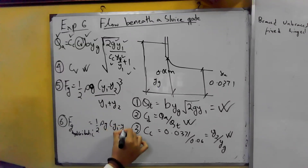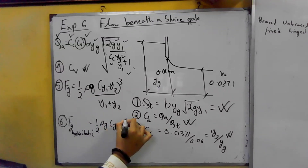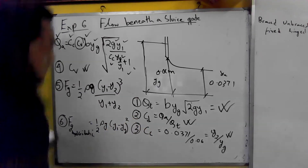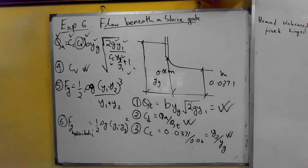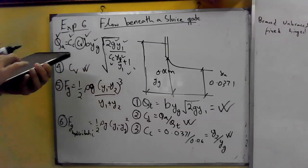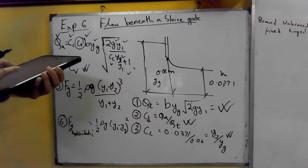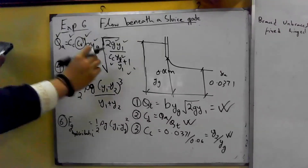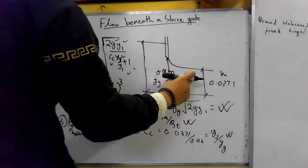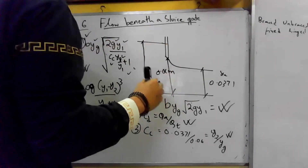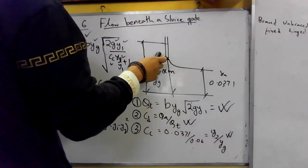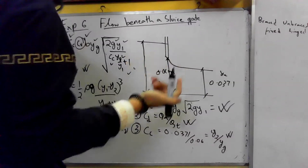The formula involves y1 minus y-gate squared. This is experiment number six. Experiment one is a flow in an open channel — higher depth or lower depth. There are important theoretical considerations: the force on the gate is not hydrostatic. Force on the gate is not hydrostatic.